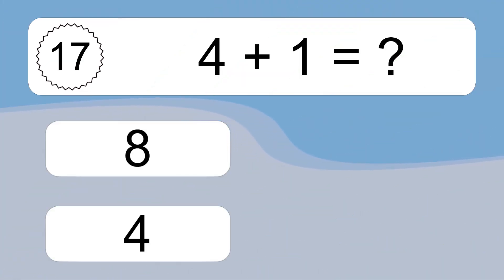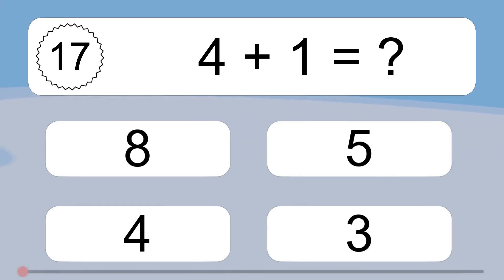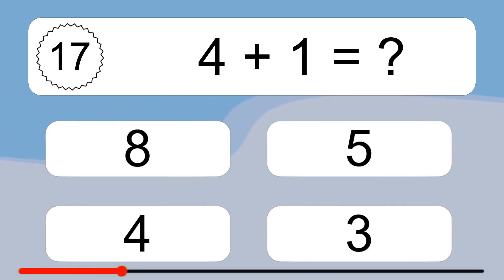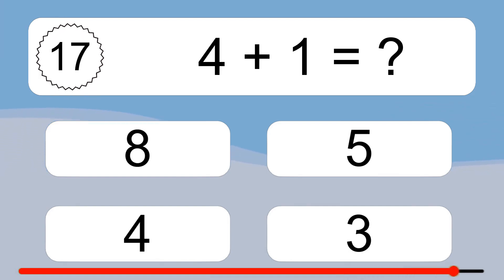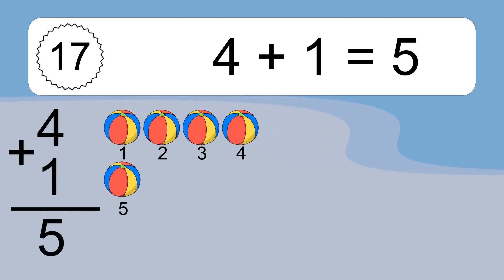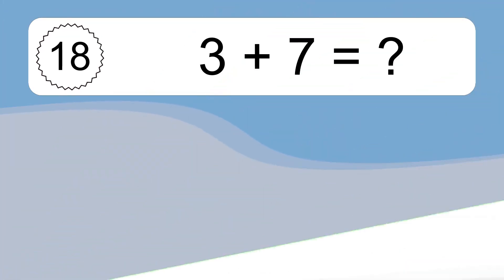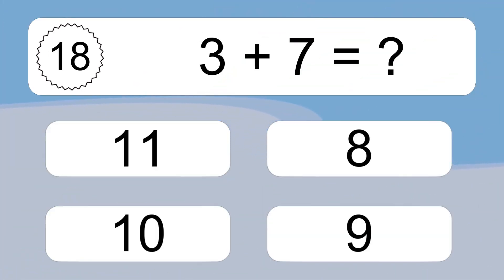4 plus 1 equals what? 4 plus 1 equals 5. Let's count it. 1, 2, 3, 4, 5. 3 plus 7 equals what?